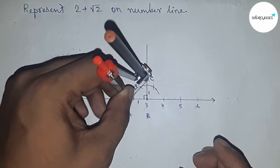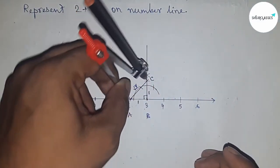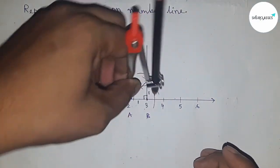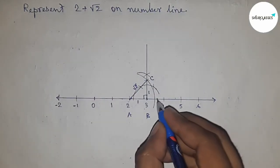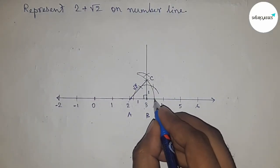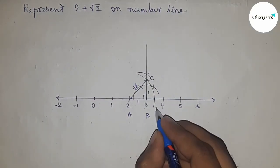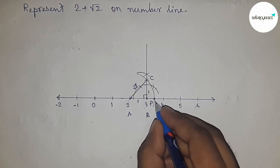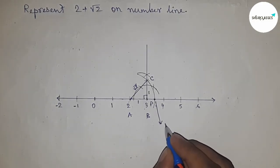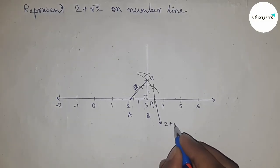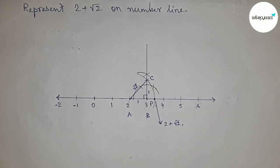Next, taking the length of the hypotenuse using the compass and drawing an arc which cuts the number line at a point P. This point P is the representation of 2 plus root 2 on the number line. Thanks for watching — please subscribe, like, and comment on my video.